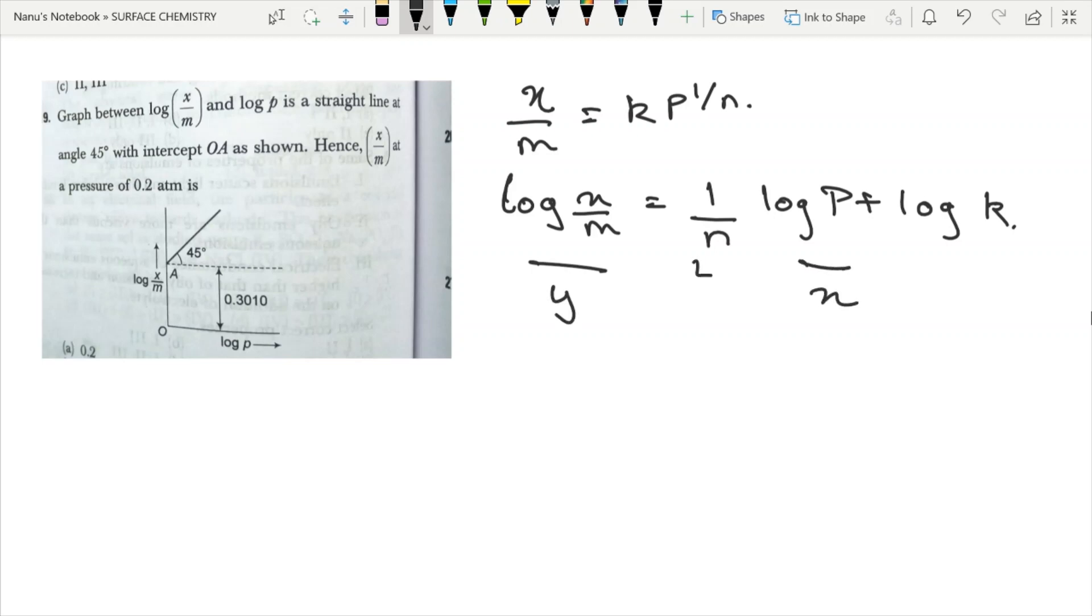We need to find x/m. What is the slope in a straight line? The slope is tan theta. So m equals 1/n equals tan theta equals tan 45 degrees, which equals 1. So we got 1/n. We have the value of log p at pressure 0.2 atmosphere. And the intercept is given, so we know k as well.